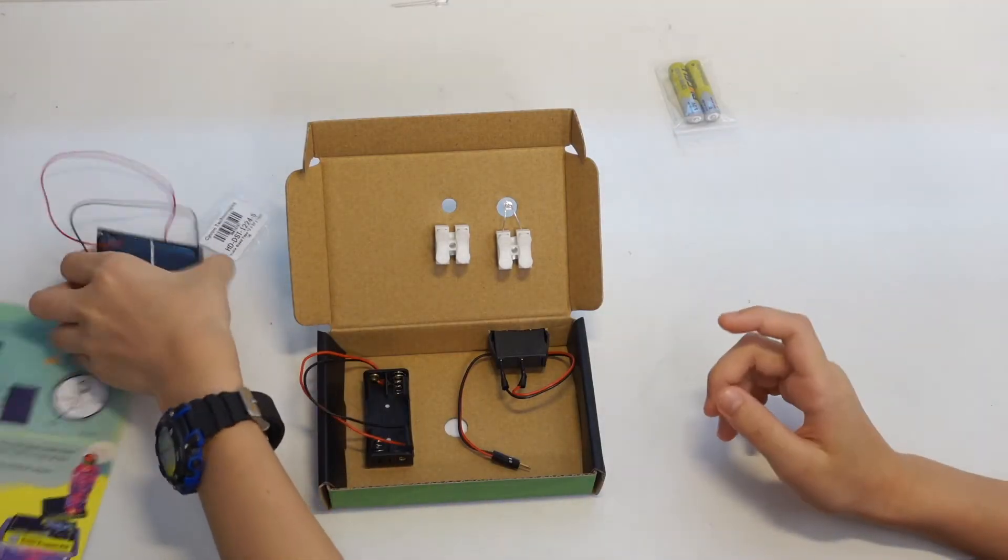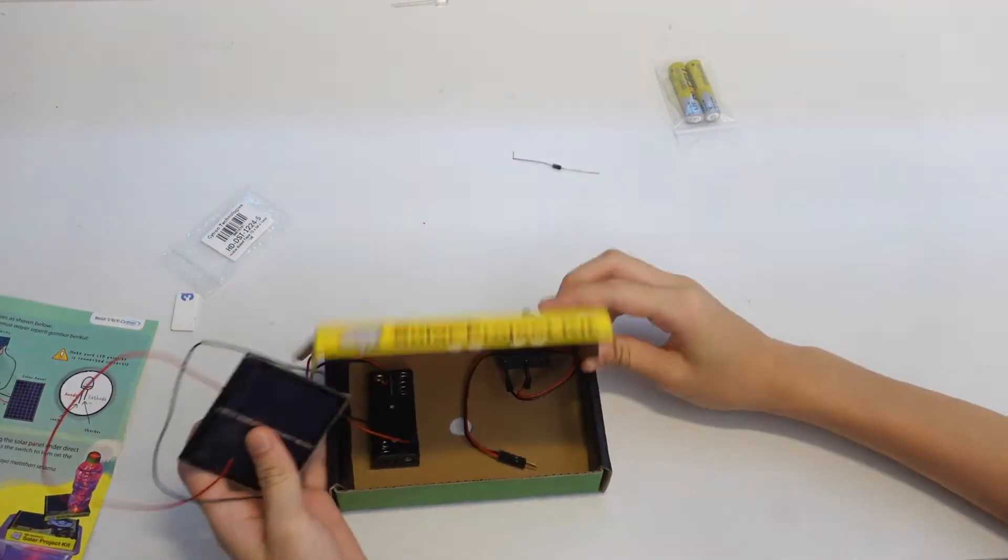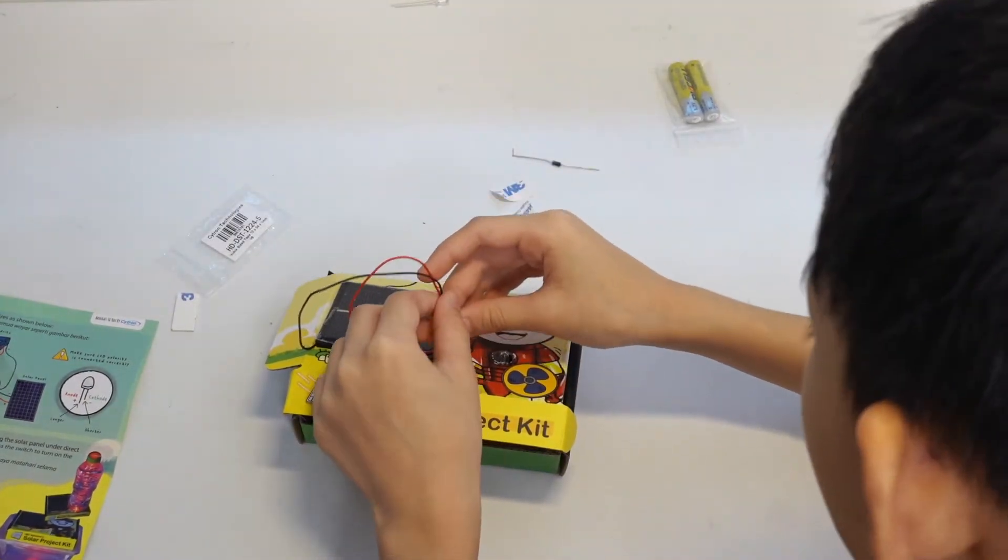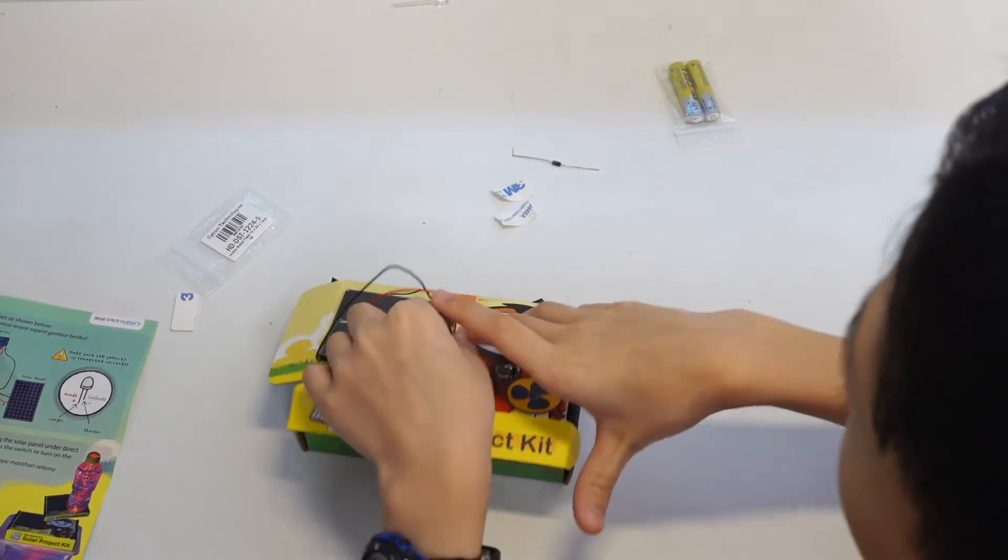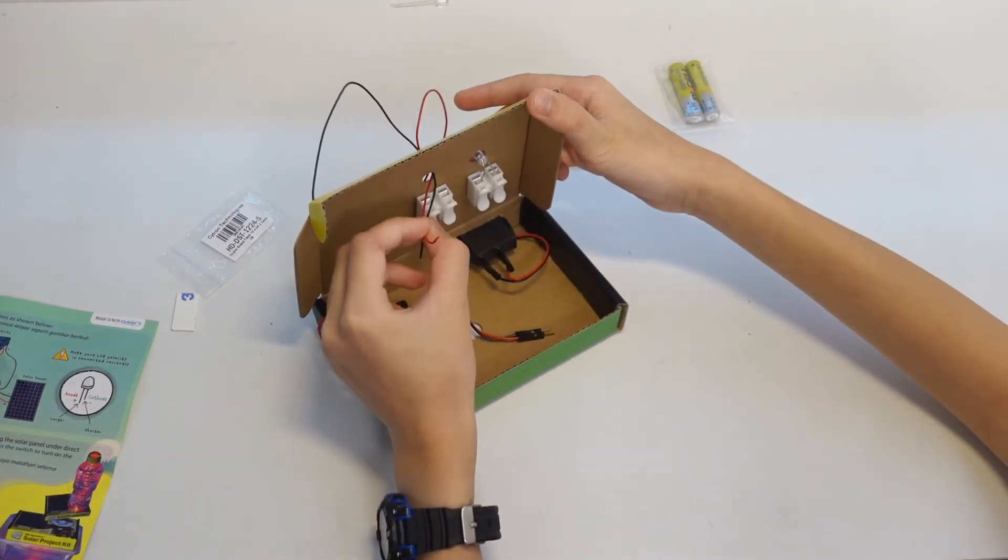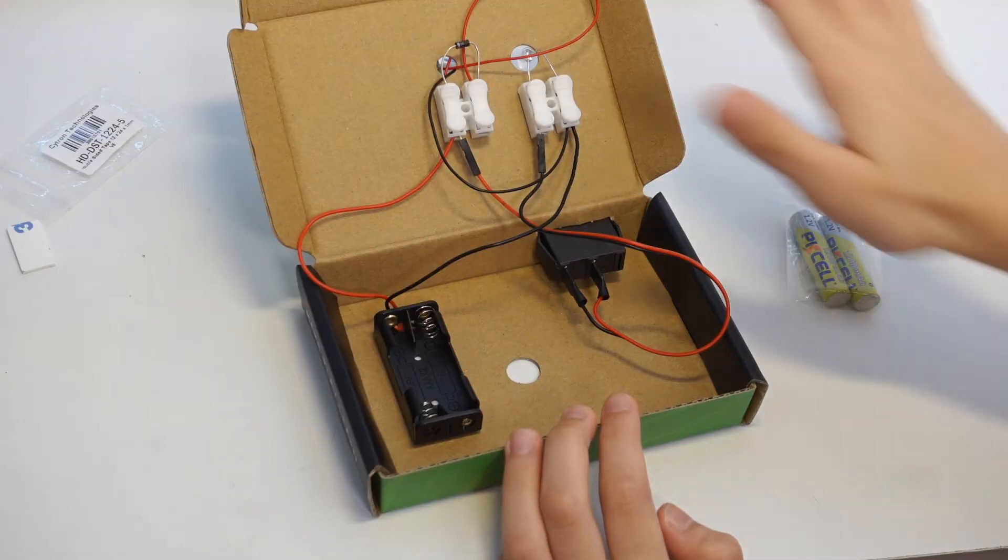Now, we are going to stick this solar panel over here. Put the wire through the hole. So, this is how you get it wired up.